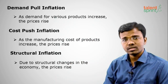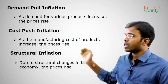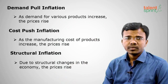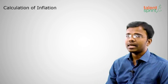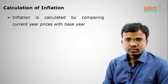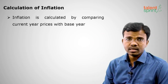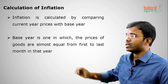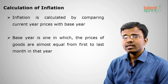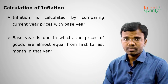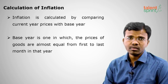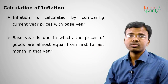So these are the three types of inflation: first, demand-pull — demand is causing inflation; next, manufacturing cost is causing inflation; and third, structural changes are causing inflation. Moving on to the calculation of inflation — how do we actually calculate it? Inflation is calculated by comparing the current year prices with the base year prices. The base year is the one used for comparison with the current year prices. In the base year, the prices of products are almost equal or constant from the first month to the last month.